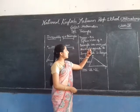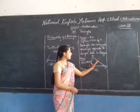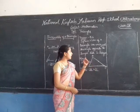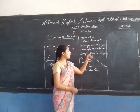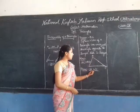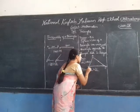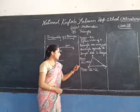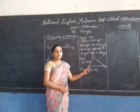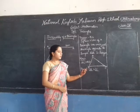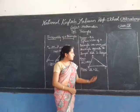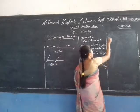Theorem: if two sides of a triangle are unequal, the angle formed opposite to the longer side is larger. We have to prove angle B is greater than angle C. We are given that side AC is greater than side AB, and we have to prove angle B is greater than angle C.